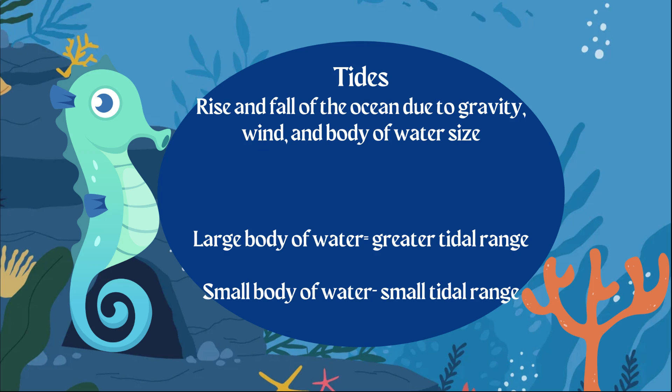High tides and low tides are caused by gravity, so the earth, the sun, and the moon all play a part. Tides also relate to wind and the size of the body of water. A smaller body of water will show a smaller tidal range, while a larger body of water shows a greater tidal range — the high tide may be higher and the low tide lower — because there's more space for water to spread out.